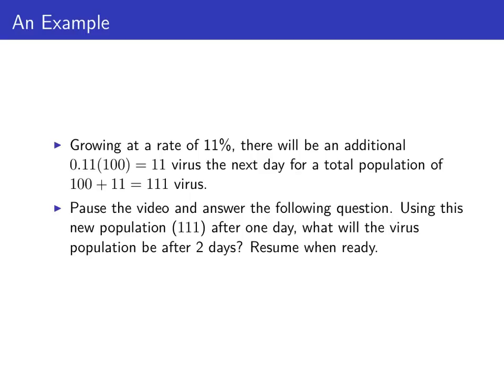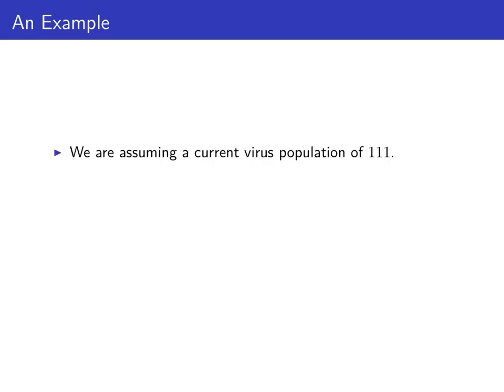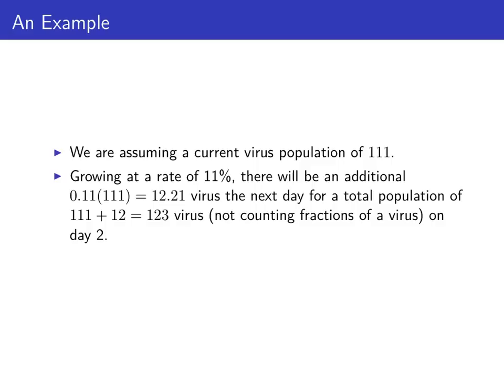With 111 virus and an 11 percent growth rate, what will the virus population be after two days? Resume the video when you're ready. With an assumption of a virus population of 111 and a growth rate of 11 percent, there will be an additional 11 percent of the 111 virus, or about 12.21 virus, that we add the next day, for a total population of 111 plus 12 virus, or 123 virus — and we're not going to count fractions of virus.